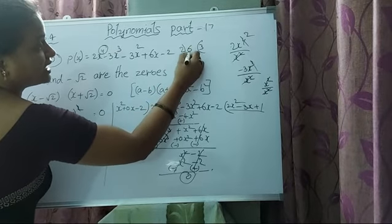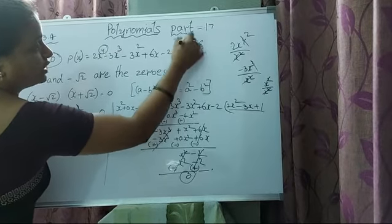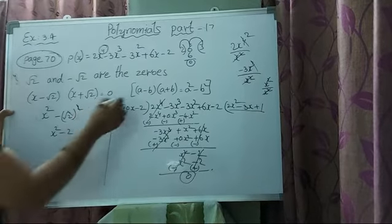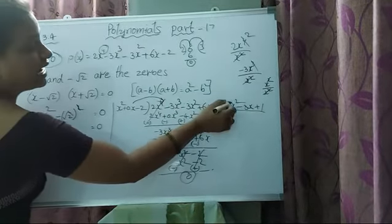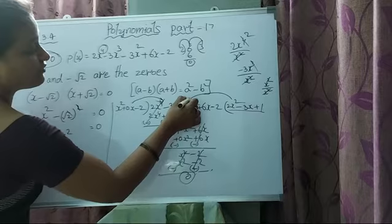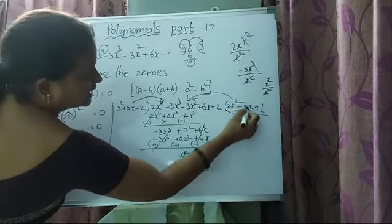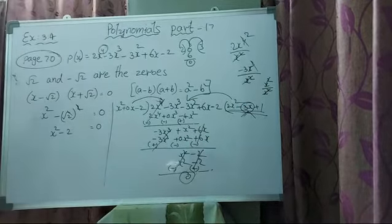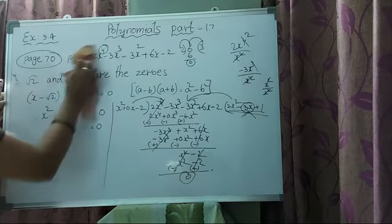The quotient is 2x square minus 3x plus 1. Just as 2 and 3 are factors of 6, in the same way this one is a factor and this is also a factor. From the quotient, by splitting the middle term, we can find 2 more other factors and we can find the zeros from that.